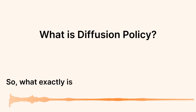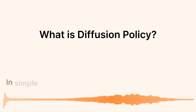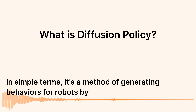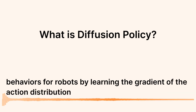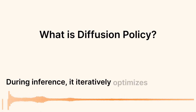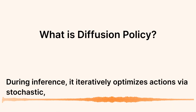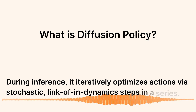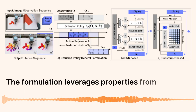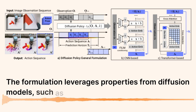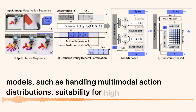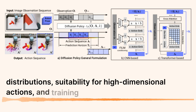So, what exactly is diffusion policy? In simple terms, it's a method of generating behaviors for robots by learning the gradient of the action distribution score function. During inference, it iteratively optimizes actions via stochastic Langevin dynamics steps in a series. The formulation leverages properties from diffusion models, such as handling multimodal action distributions, suitability for high-dimensional actions, and training stability.